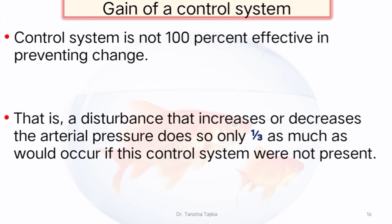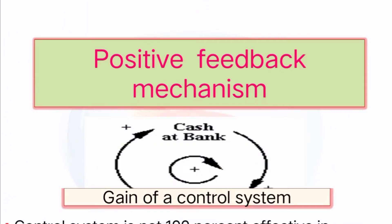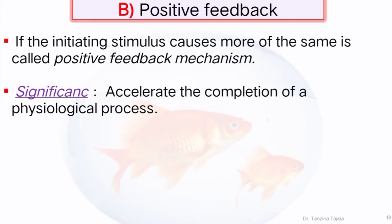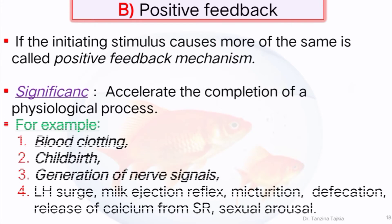A control system is not 100% effective in preventing these changes. A disturbance that increases or decreases arterial pressure does so only one-third as much as would occur if this control system were not present. Then, positive feedback mechanism: it is defined as when the initiating stimulus causes more of the same, it is called positive feedback mechanism.